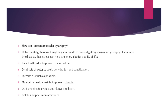Unfortunately, there is nothing you can do to prevent getting muscular dystrophy. However, if you have the disease, these steps can help you enjoy a better quality of life: eat a healthy diet to prevent malnutrition, drink lots of water to avoid dehydration and constipation, exercise as much as possible, eat in a healthy way to prevent obesity, quit smoking to protect your lungs and heart, and get flu and pneumonia vaccines.